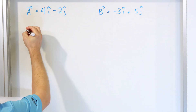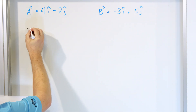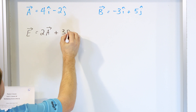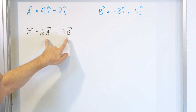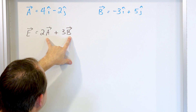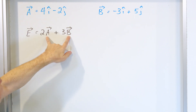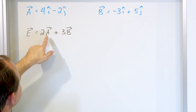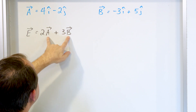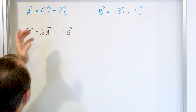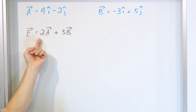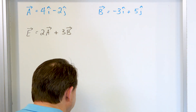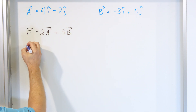What we have defined in the problem statement is that vector E is two times whatever vector A is, plus three times vector B. Even though A and B are vectors, you can think about this like a regular algebraic expression. If A and B were just variables and you substituted in what they were equal to, you would follow order of operations — the multiplications come first before the addition. That's the way you have to handle it. Let's go ahead and write it all out.